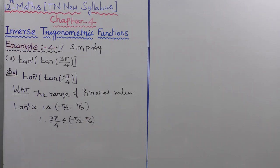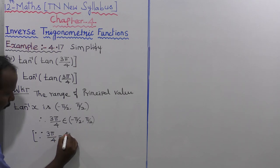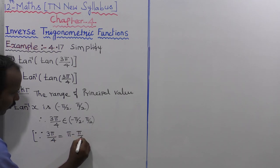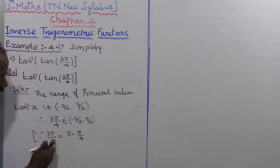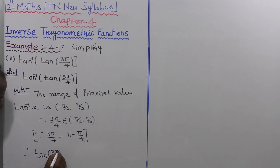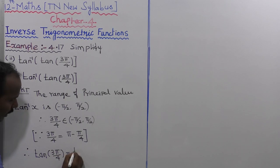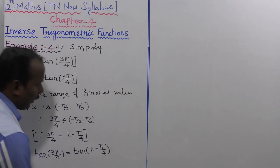So next we rewrite 3π/4. Since 3π/4 equals π minus π/4 — because 4π/4 minus π/4 equals 3π/4 — therefore tan of 3π/4 equals tan of (π minus π/4).